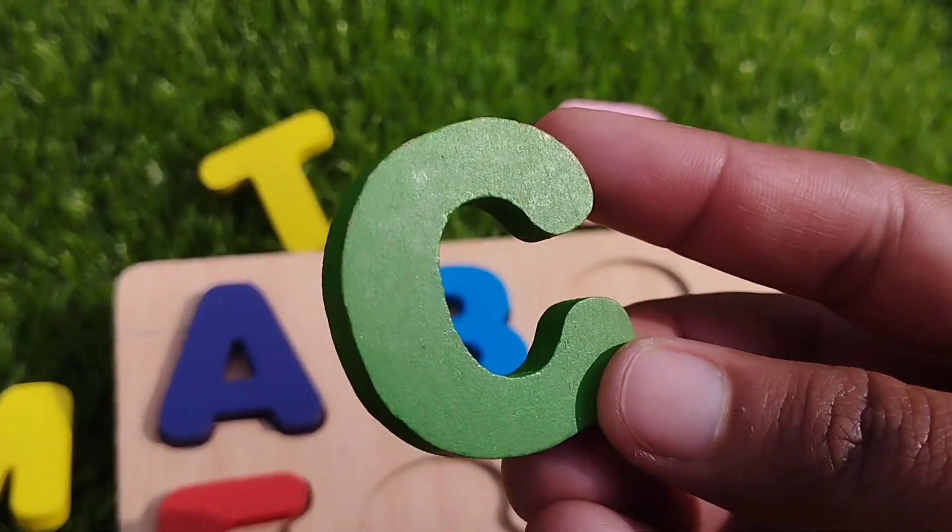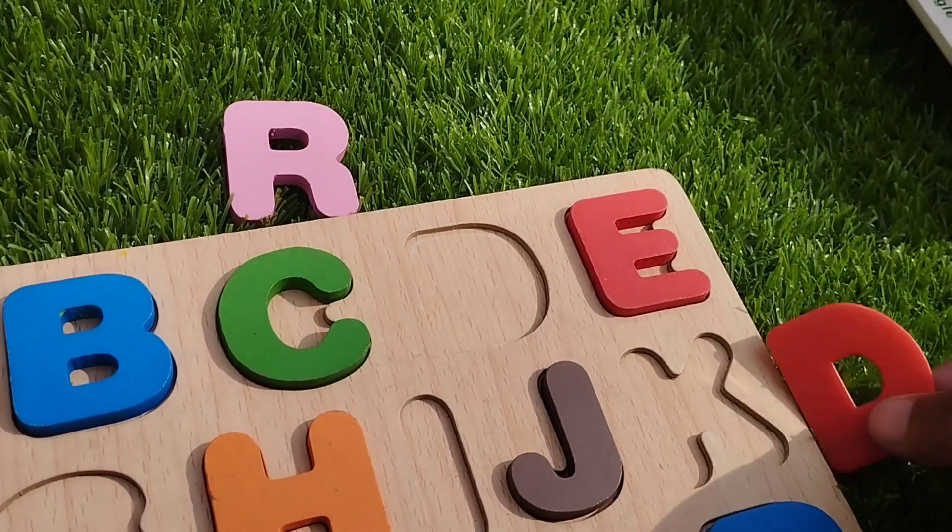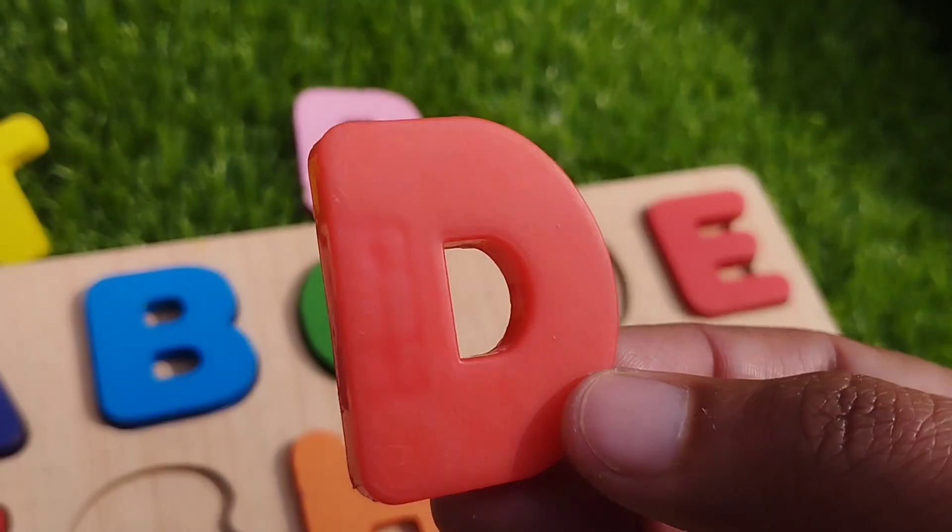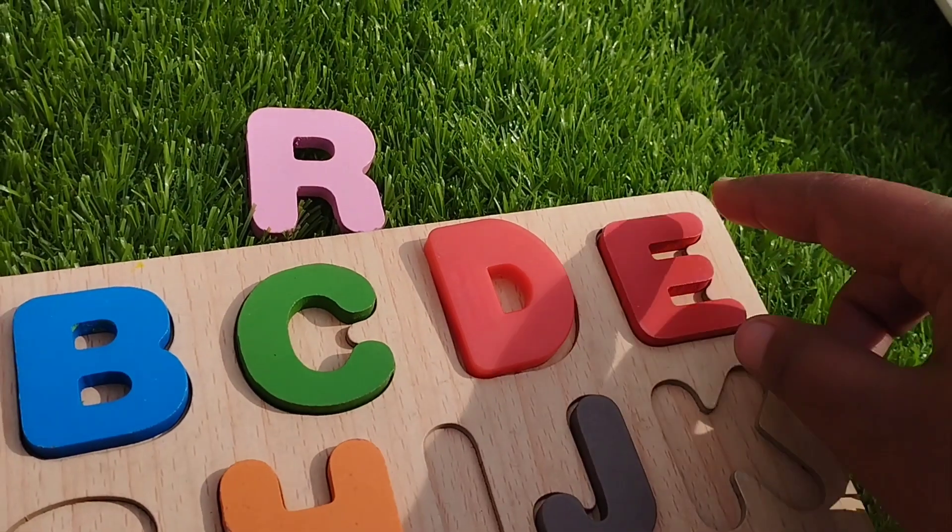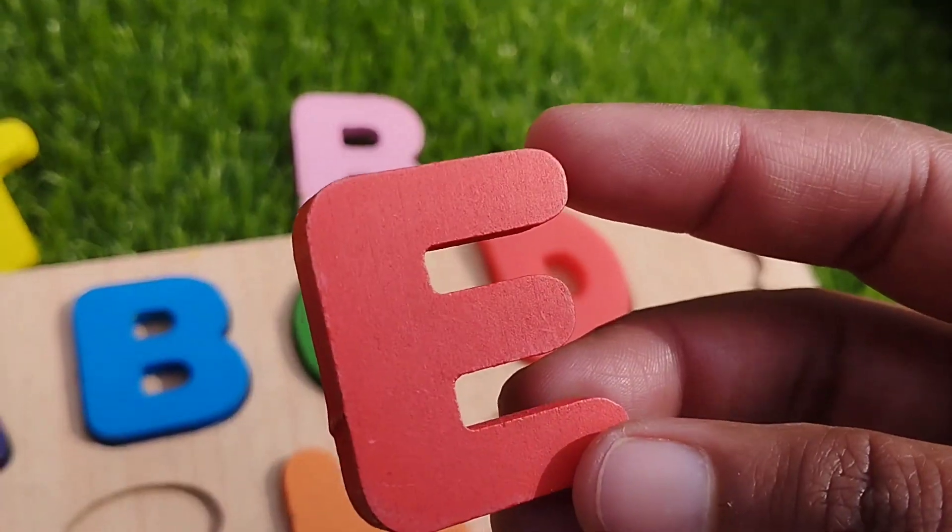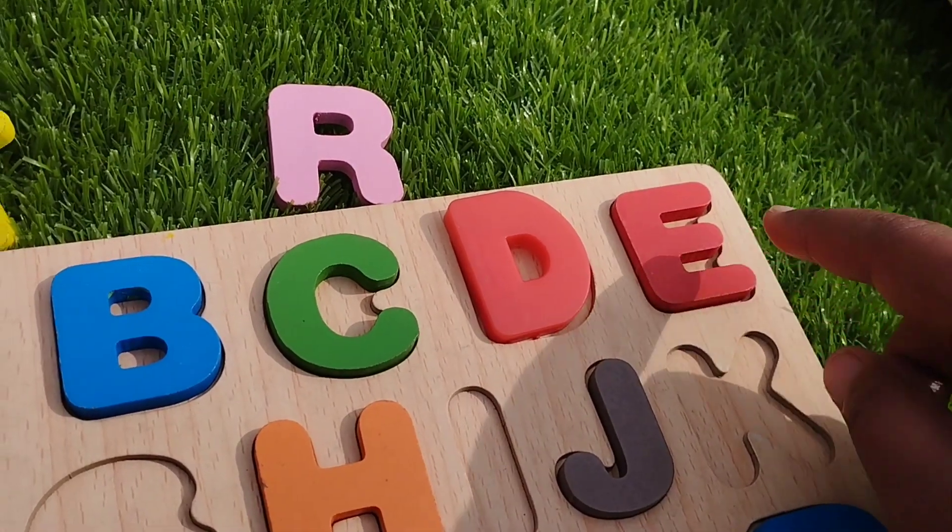The next letter is C. C for cat. The next letter is D. D for dog. The next one is letter E. E for elephant. Letter E.